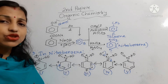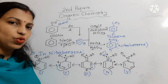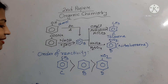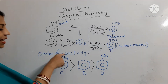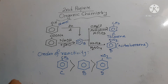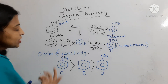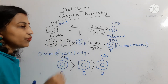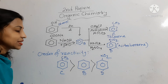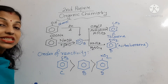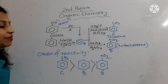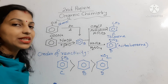So the order of reactivity between benzene, toluene, and nitrobenzene is: toluene > benzene > nitrobenzene. In toluene, a reactivating group (CH3) is present which activates and increases reactivity. In benzene, no activating or deactivating groups are present, so reactivity remains the same as the reference. In nitrobenzene, the nitro group is a deactivating group, so its reactivity decreases. Therefore toluene is most reactive, followed by benzene, and nitrobenzene is least reactive.